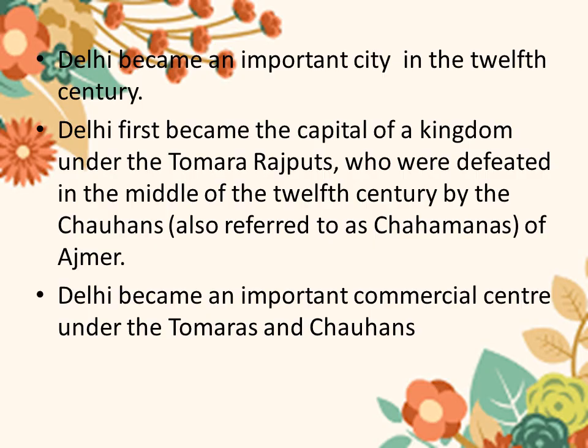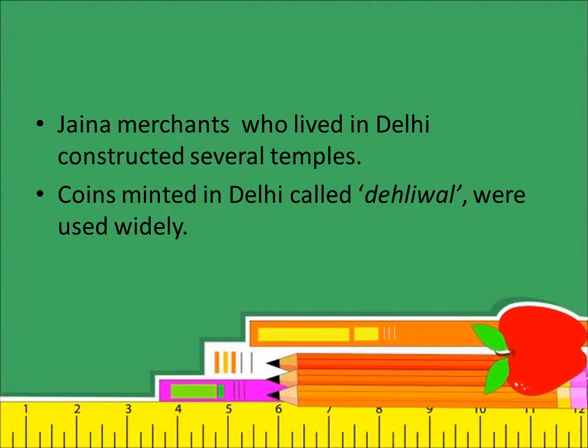Delhi became an important city in the 12th century. Tomara Rajputs were the rulers who first made Delhi their capital, but they were defeated by the Chohans of Ajmer in the 12th century. So the Tomaras and Chohans together made Delhi an important commercial centre. Jaina merchants who lived in Delhi constructed several temples here.